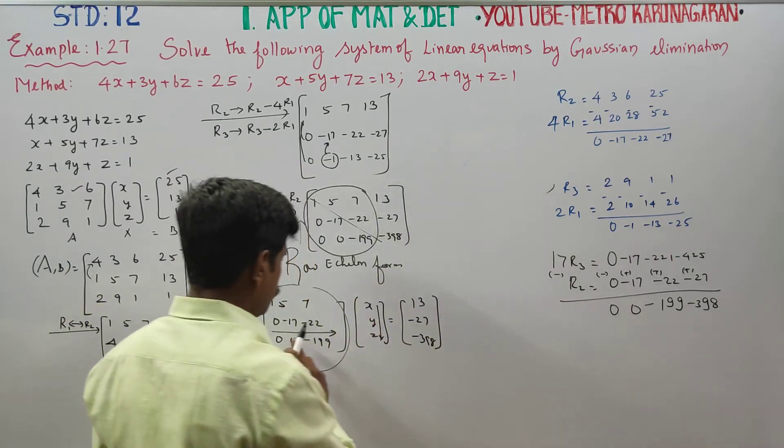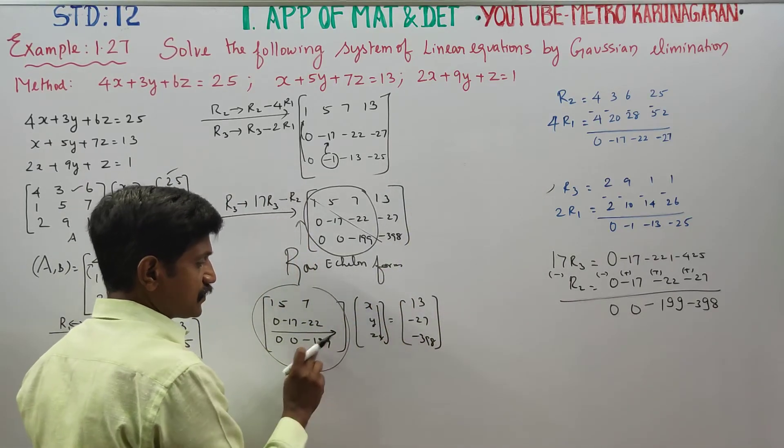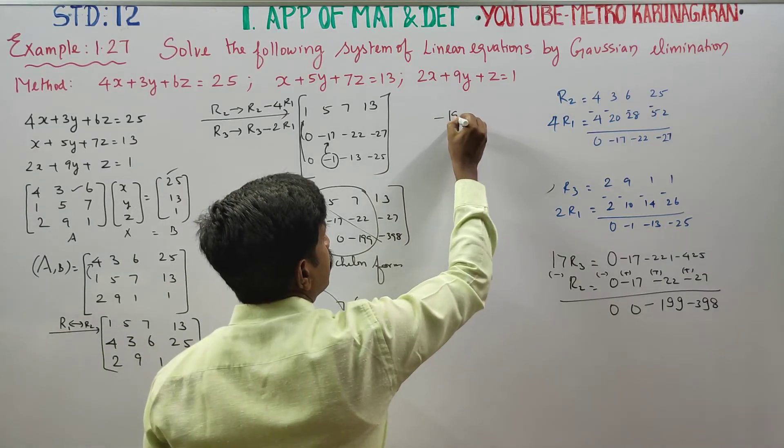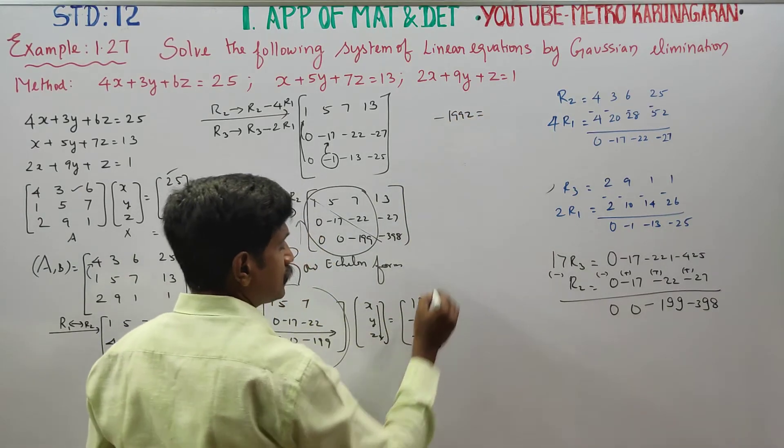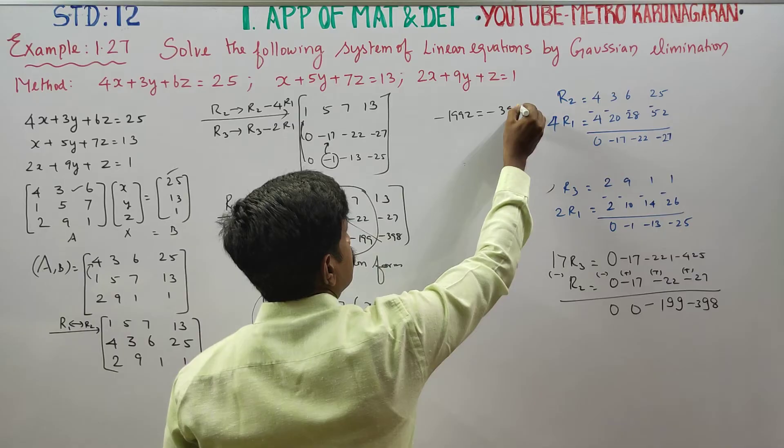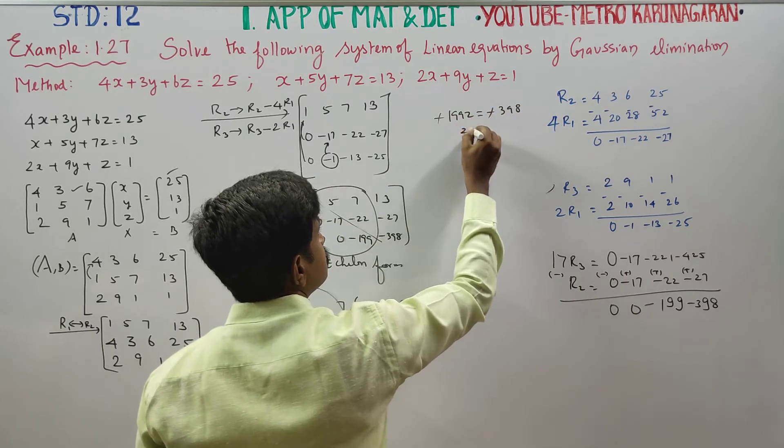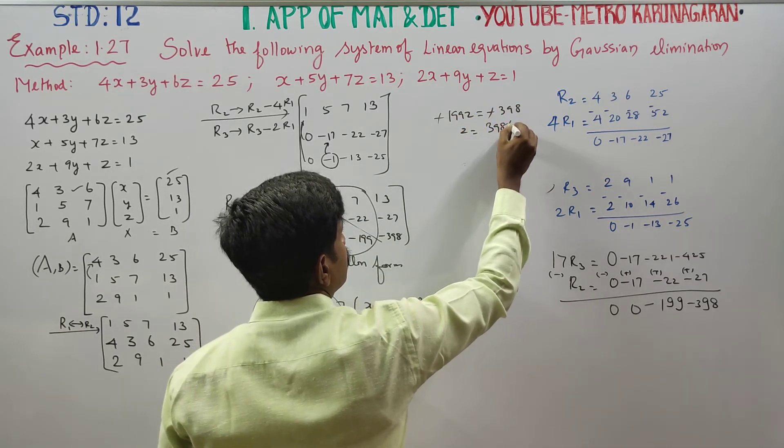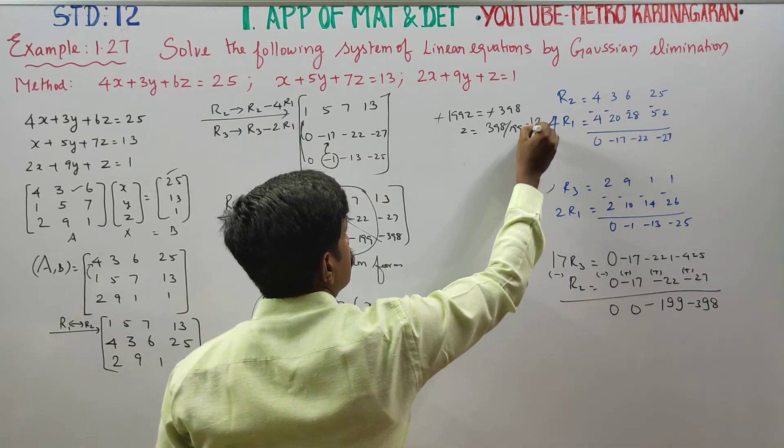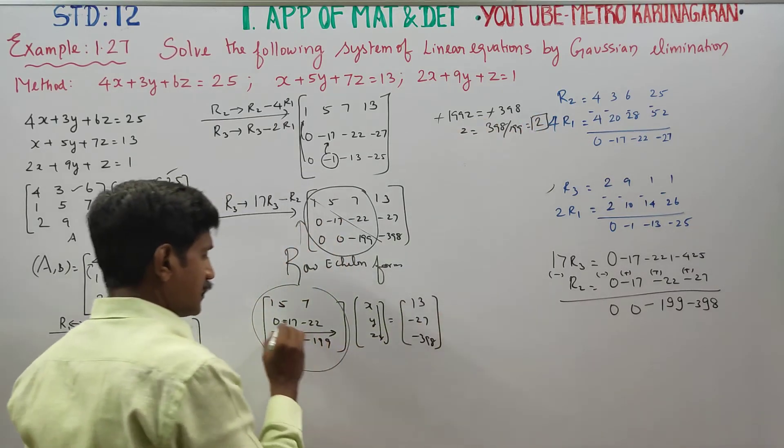0 into x is 0. 0 into y is 0. Minus 199z equal to minus 398. Minus minus cancel. z is equal to 398 divided by 199. Cancel, the answer is 2. z is ready.